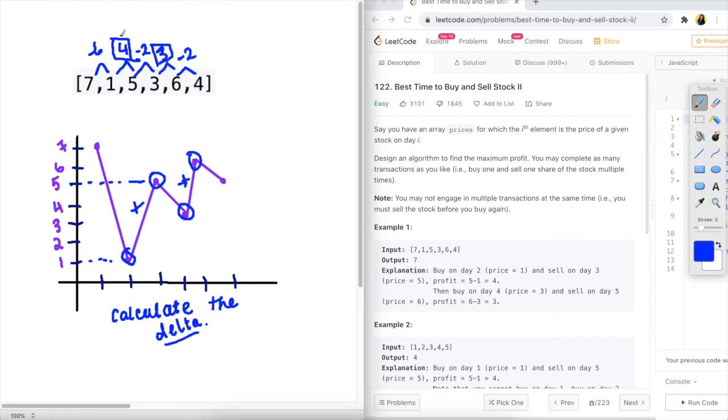Basically, the idea is that we don't want to accumulate negative values towards our maximum profit, because that's not a good strategy to make money when you're selling and buying stocks. So what we need to do is add these positive deltas to get us to our final answer.